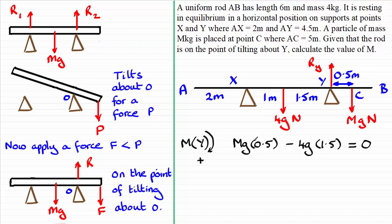Now, if I just tidy this up, I've got 0.5MG here. This will be minus 6G equals 0. So I can just add 6G to both sides. And if I do that, I end up with 0.5MG equals 6G.